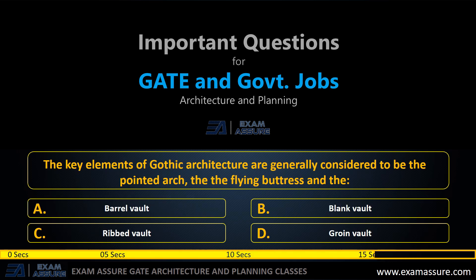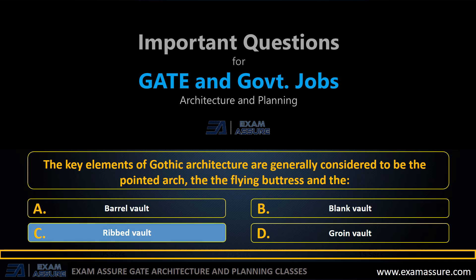Next question: The key elements of Gothic architecture are generally considered to be the pointed arch, the flying buttresses, and — option A: barrel vault, option B: blank vault, option C: ribbed vault, option D: groin vault. The correct answer is ribbed vault.